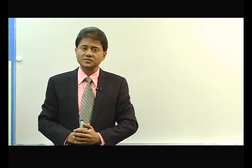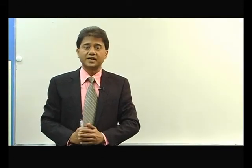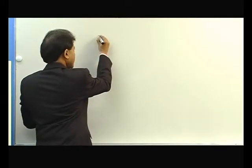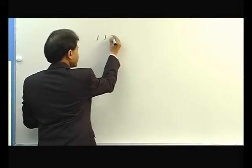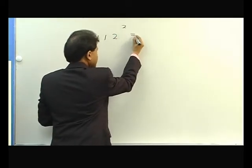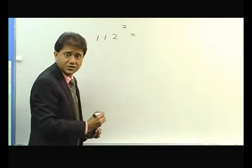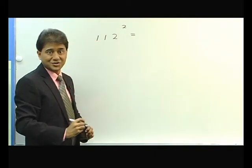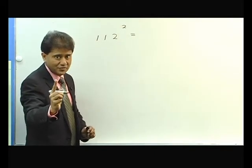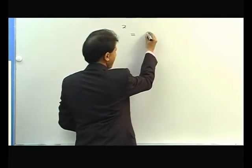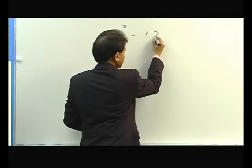Let me now explain you with a slightly difficult example. 112 square. The difference from 100 is 12. You add this 12 to 112, you get 124.